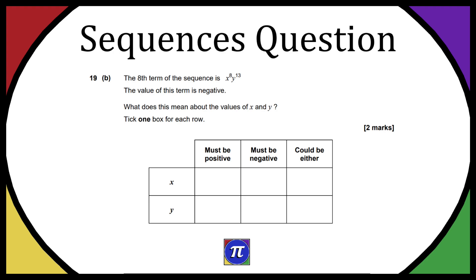Then we have a box where you have x and y and you must list them as positive, negative, or could be either. So let's start with the x first.